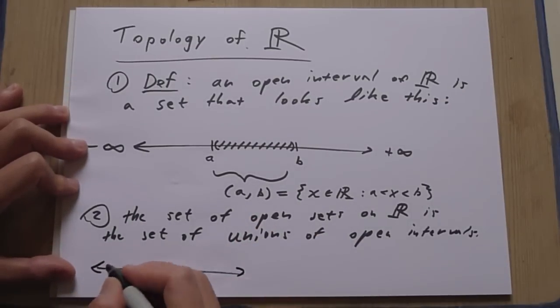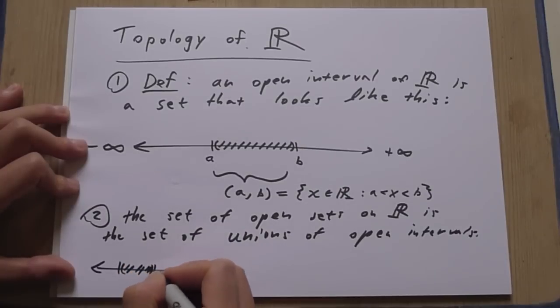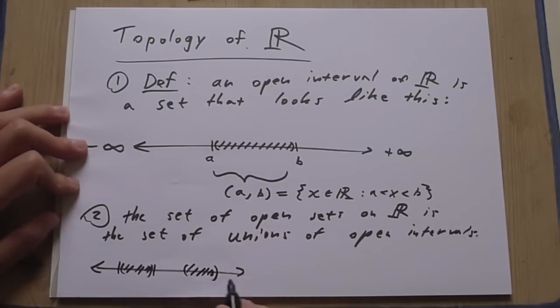They're collections of open intervals. So they're sets that look like this on the real line.